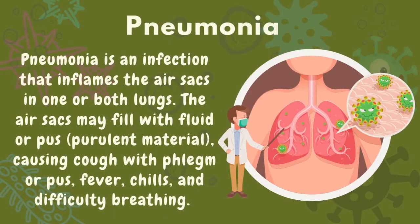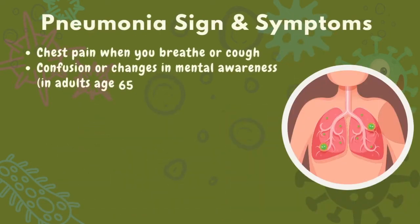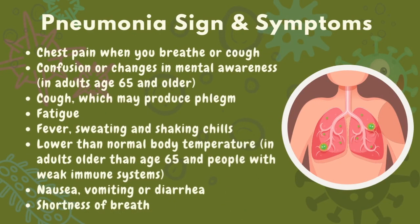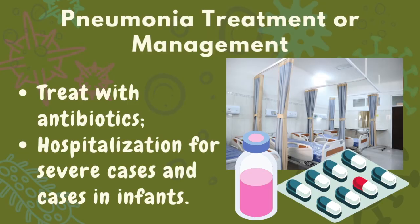Pneumonia is an infection that inflames the air sacs in one or both lungs. The air sacs may fill with fluid, causing cough with phlegm, fever, chills, and difficulty in breathing. Bacteria, viruses, and fungi can cause pneumonia. These are the signs and symptoms of pneumonia. Pneumonia should be treated with antibiotics, and for severe cases, especially for infants, hospitalization is advised.